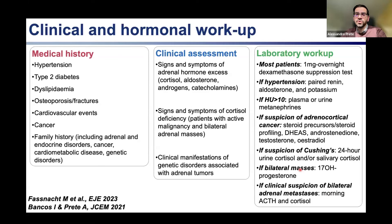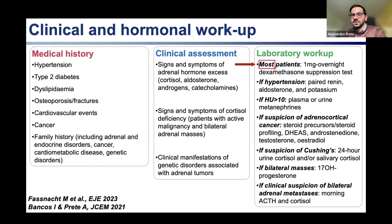There are two important updates from the 2023 guidelines. First, while previously all incidentaloma patients were recommended for overnight dexamethasone suppression testing, the updated guidelines now suggest this should be done in most patients, but not necessarily those with reduced life expectancy. Second, plasma or urine metanephrines — the test for pheochromocytoma — should only be performed if Hounsfield units are above 10. There is no need to test for pheochromocytoma if the tumor is clearly benign on imaging.